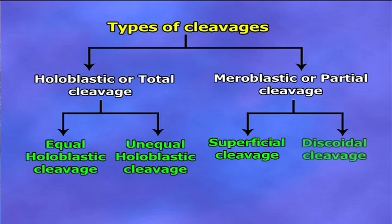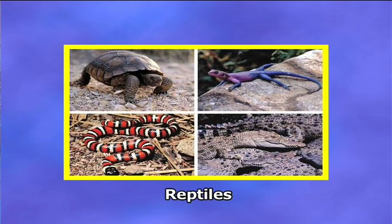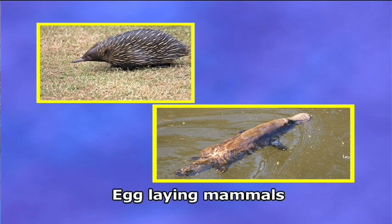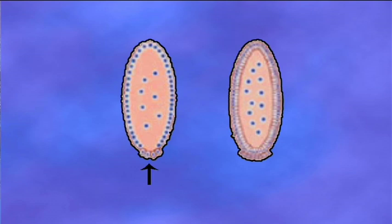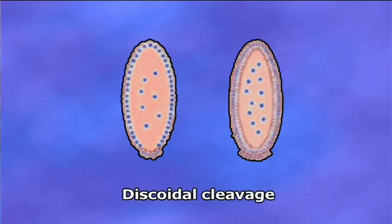Number two, discoidal cleavage: in eggs of birds, reptiles, and egg-laying mammals, cleavage remains limited to the disc-shaped area of cytoplasm called the blastodisc. The animal pole yolk is not divided. Such incomplete cleavage is known as discoidal cleavage.